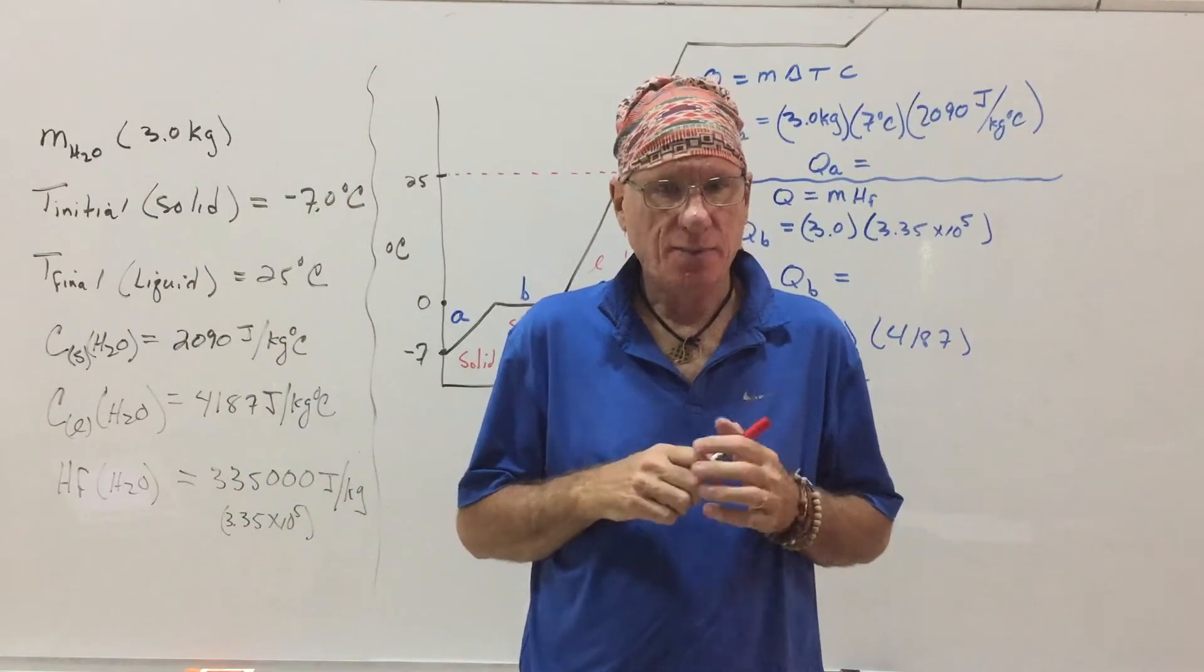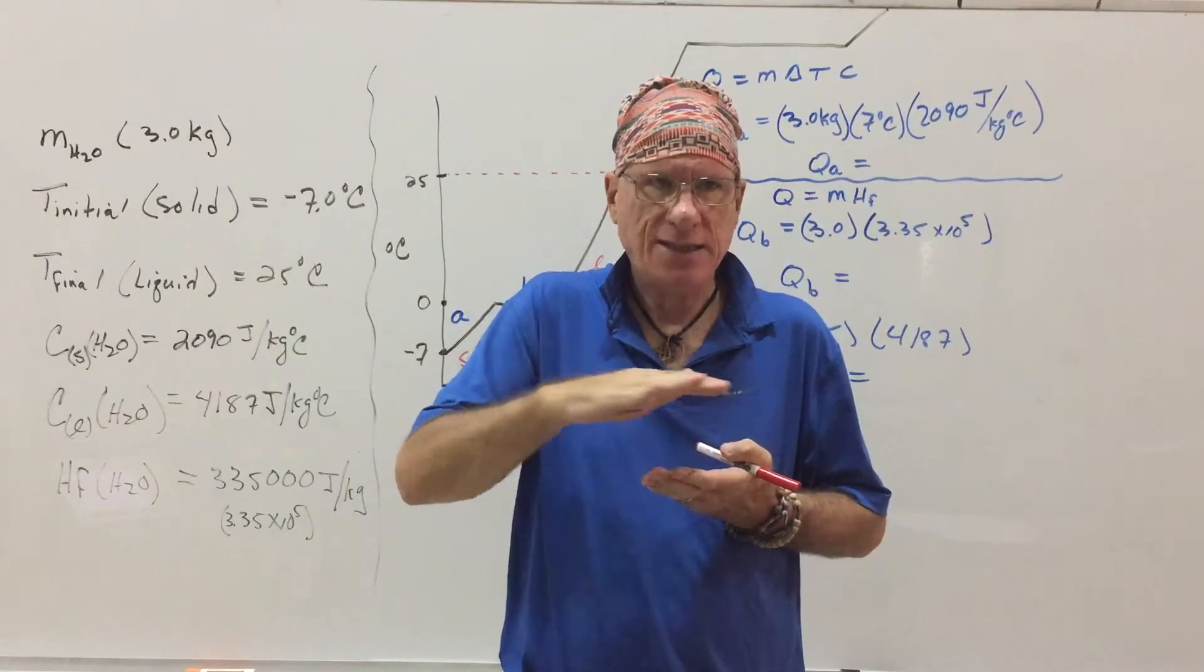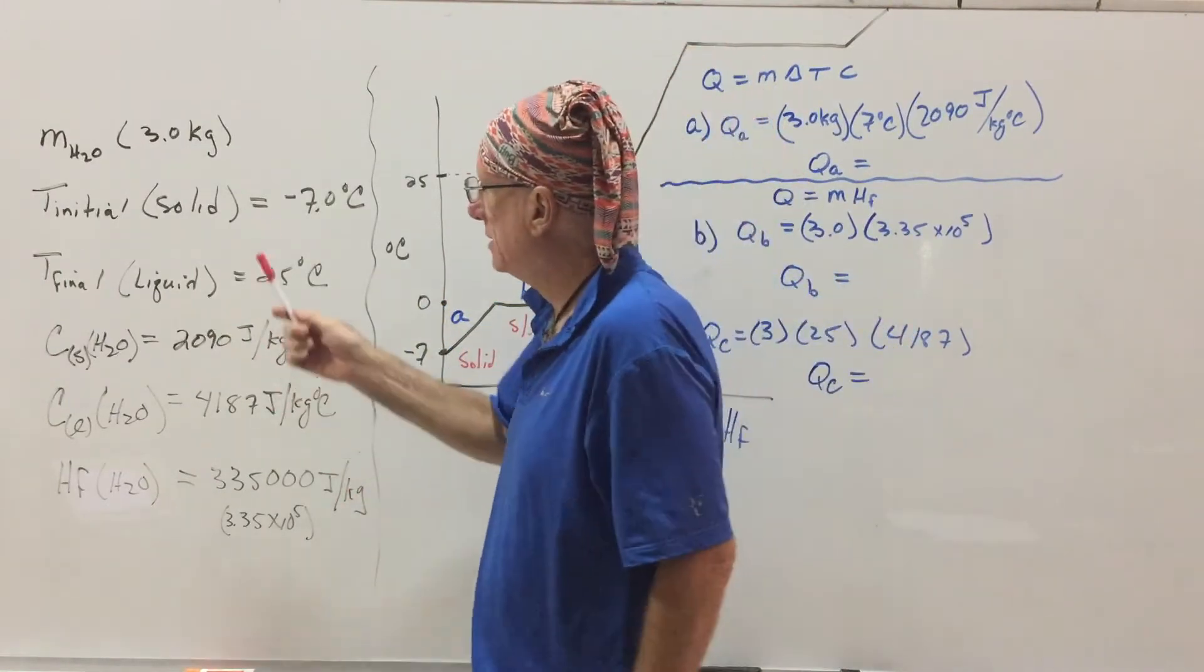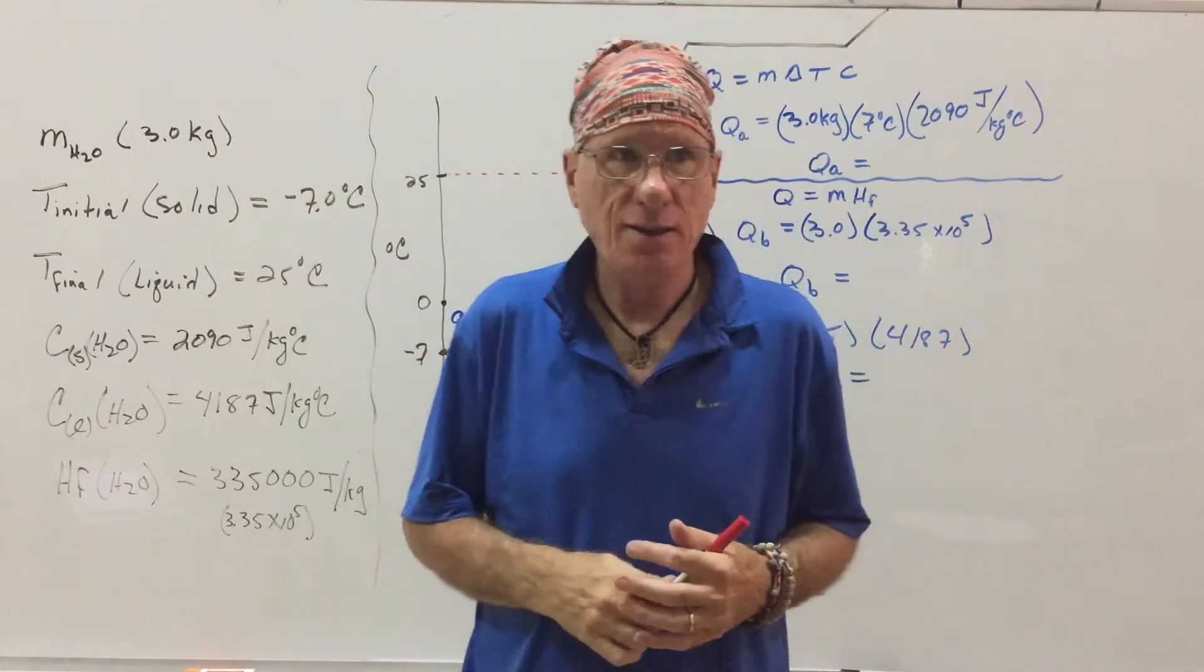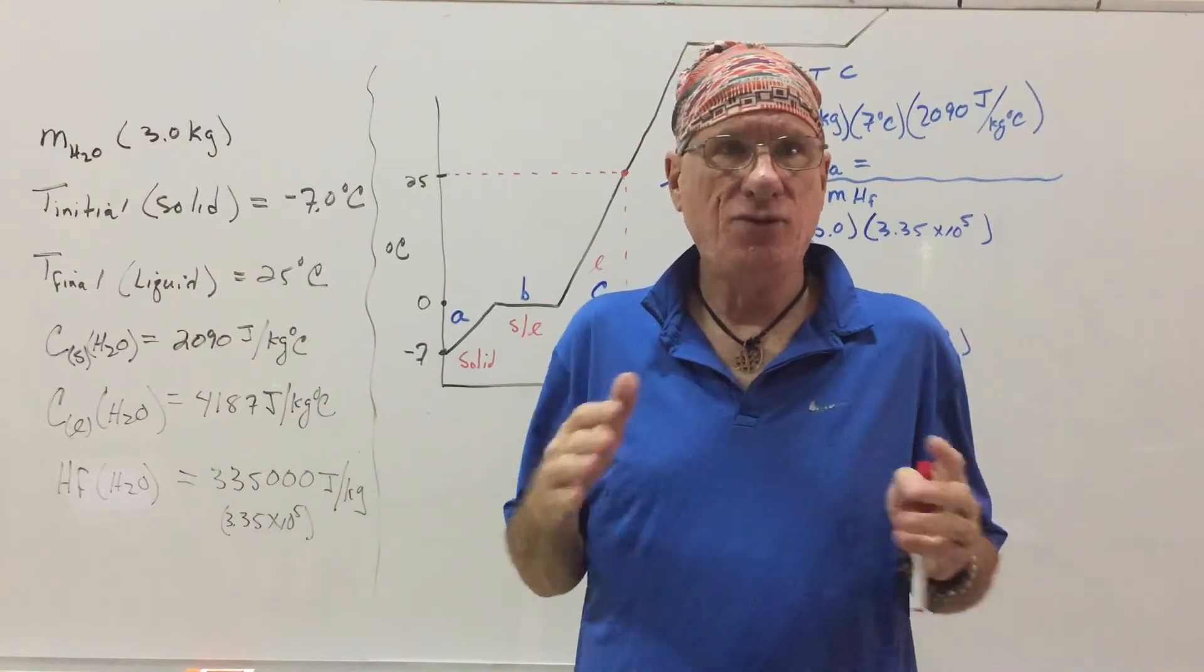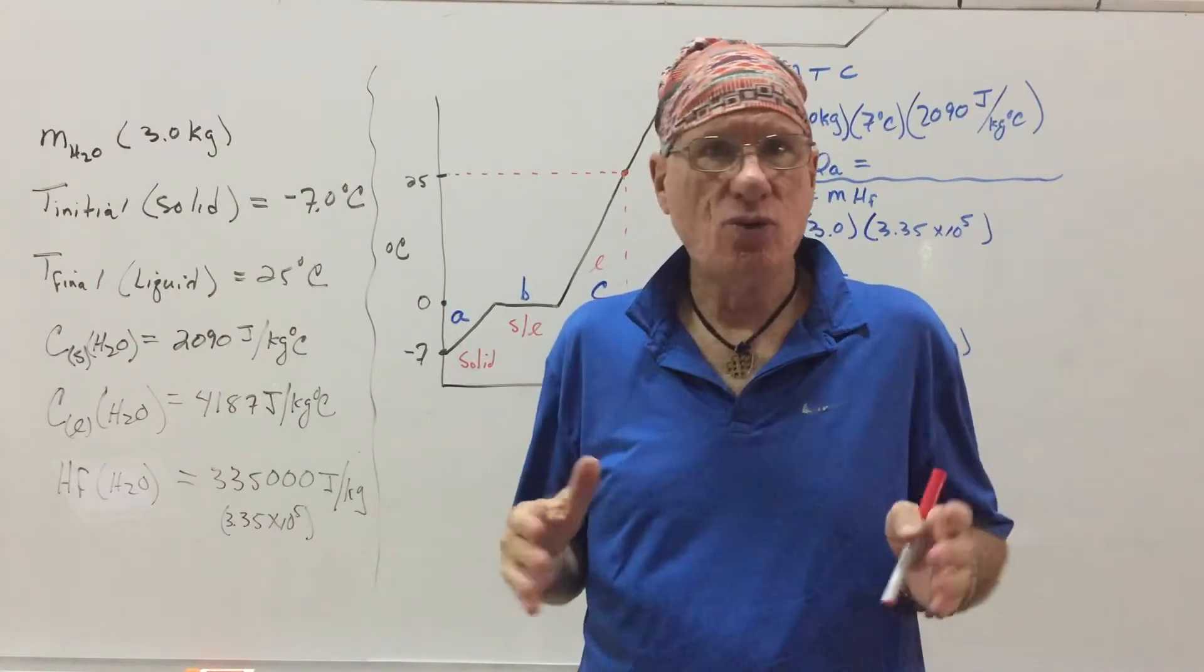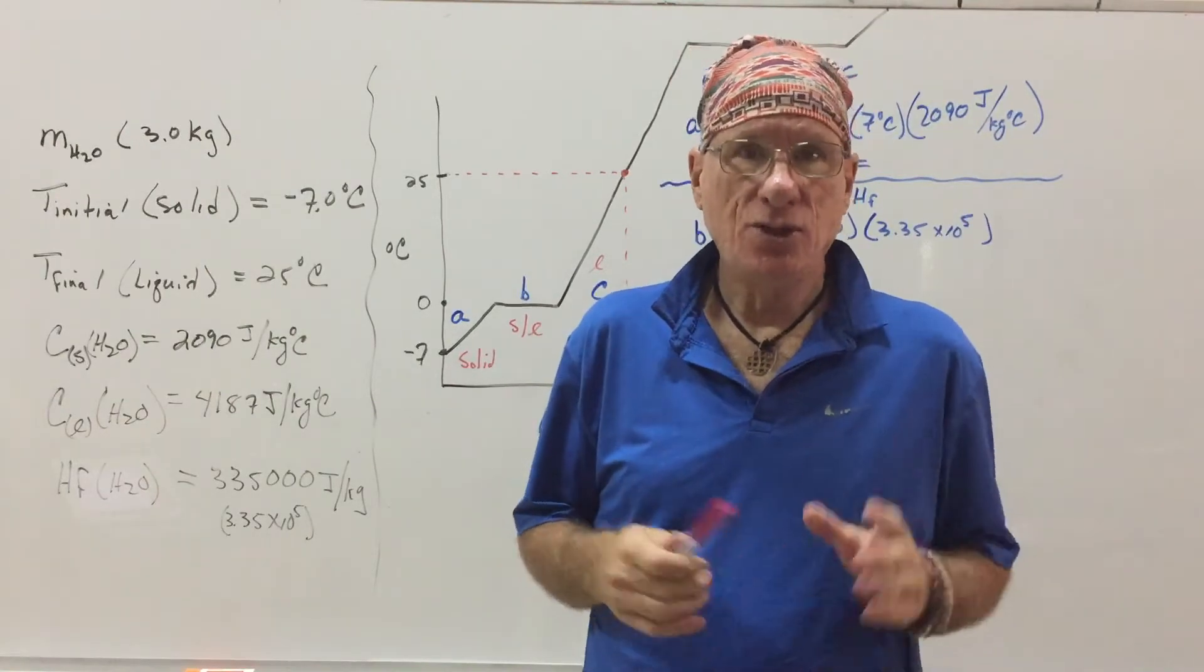We have a birdbath. Now, the birdbath has ice in it. It's solid ice. And the temperature of that ice is negative 7 degrees Celsius. So ice can be any temperature, really. It can be negative 273.15 degrees Celsius—that's absolute zero. It could be negative 20 degrees. It could be whatever the temperature is of your freezer in your refrigerator.